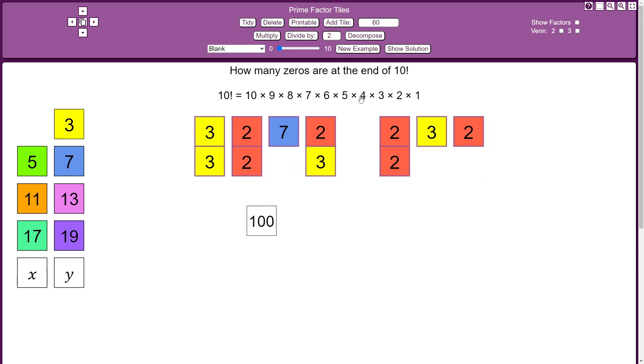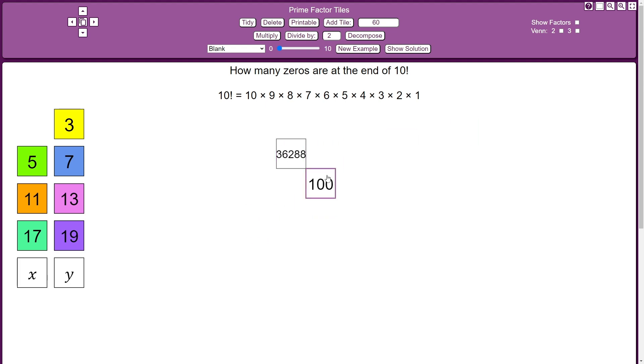And if you're interested, if I multiply all these together, I actually get 36,288. And if I multiply by the 100, you can see it's 3.6 million. And then it's got two zeros there at the end.